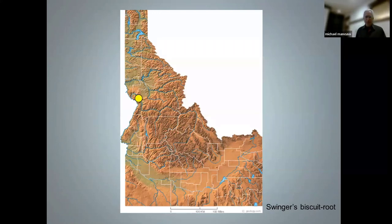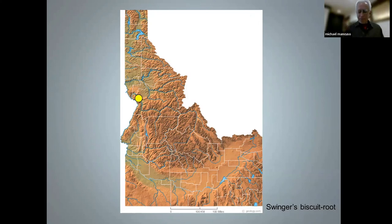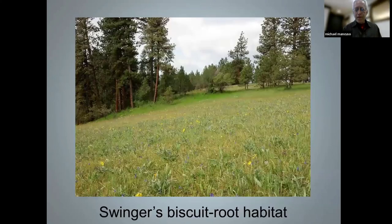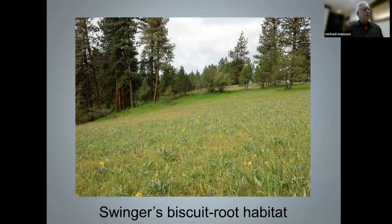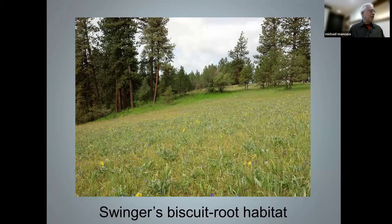Swinger's Biscuit Root is another one-dot species — known from one population in the whole world, on the Joseph Plains, a kind of plateau between the Salmon and Snake River Canyons about 20 miles east of Grangeville. Its habitat is a dry, rocky meadow within a ponderosa pine woodland ecosystem. Its restriction to this one locale gives Swingerii's Biscuit Root the distinction of having the smallest distribution of any Idaho endemic plant.